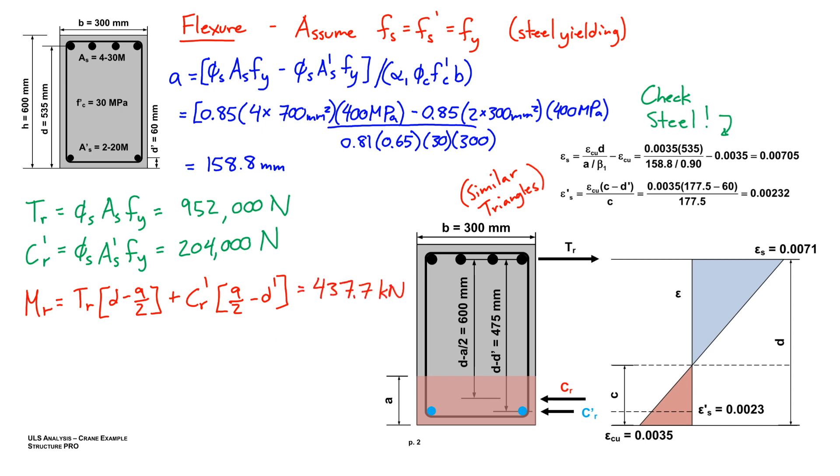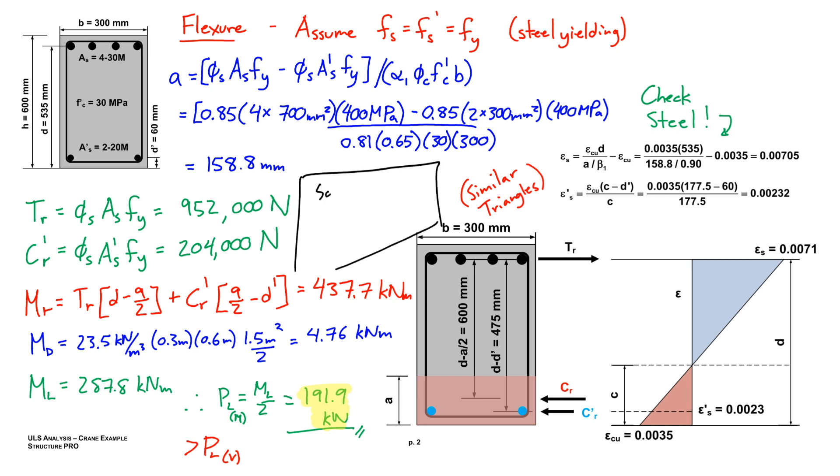We'll back-calculate out the dead portion just like we did for shear. I've calculated the dead load moment due to the 23.5 kilonewton per meter cubed self-weight, and I've calculated that to be 4.76 kilonewton meters. If we take that out, we have to use our alpha dead and alpha live load factors again. We find ML to be 287.8 kilonewton meters for a P live for flexure of 191.9 kilonewtons.